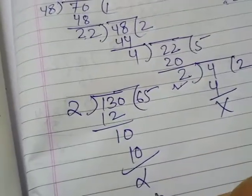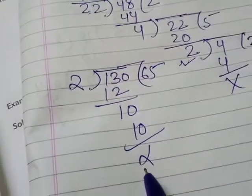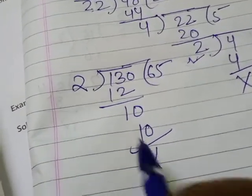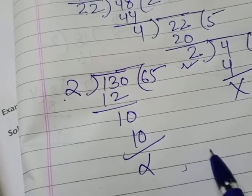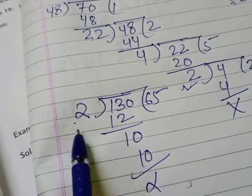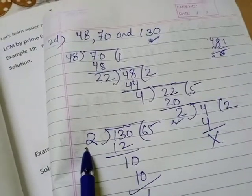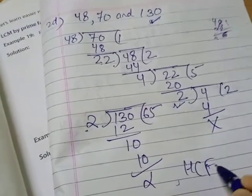Now if remainder would have been here, then your two would have been your next dividend and all, but no remainder is here. We get two in the last divisor again, right? So HCF here will be 2.